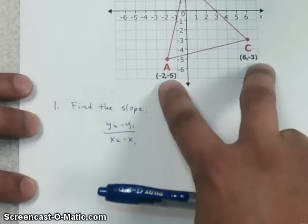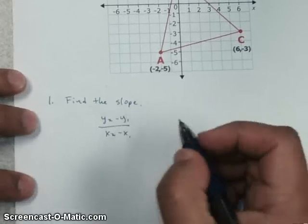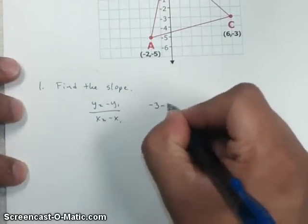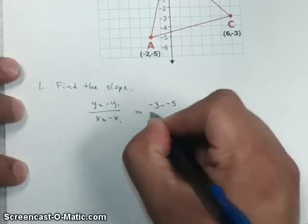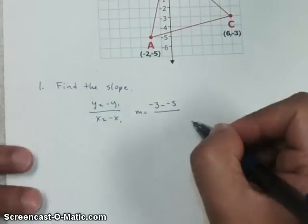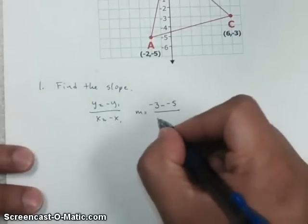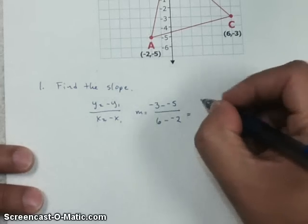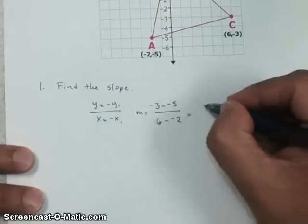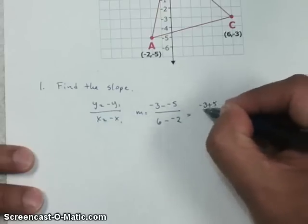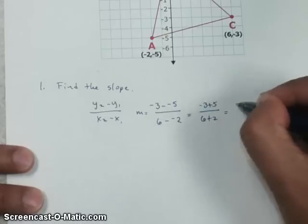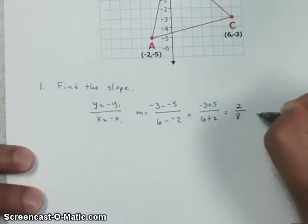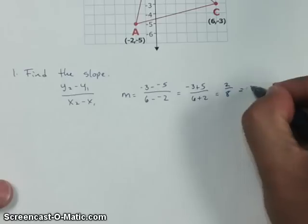So that's going to go with negative 3 minus a negative 5, and then we have 6 minus a negative 2, which is going to give us a negative 3 plus 5 and 6 plus 2. So that's going to give us 2 over 8, and that's going to equal 1 fourth.